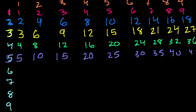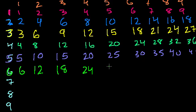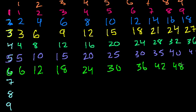6 times tables in green. 6 times 1 is 6. Add 6 each time: 12, 18, 24, 30, 36, 42, 48. 48 plus 6 is 54. So 6 times 9 is 54.